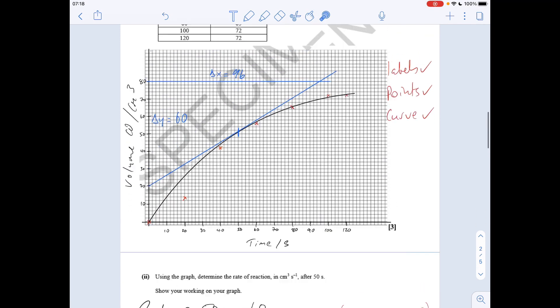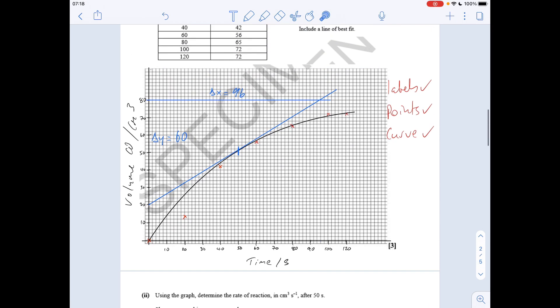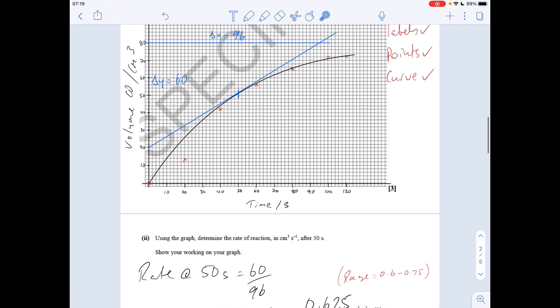I've already done the workings out on the graph. The question: use the graph to determine the rate of reaction after 50 seconds. You can see I've marked up on the graph where 50 seconds is. I've drawn a tangent to the curve and then just calculated the gradient by working out the change in y and dividing by the change in x. So I got 0.625. Whenever you've got to draw a tangent to a curve, there's always a range allowed for the gradient. As long as you're within that range there, you'd be fine.